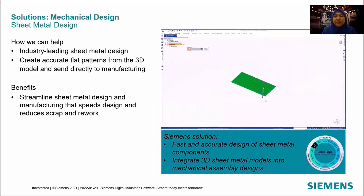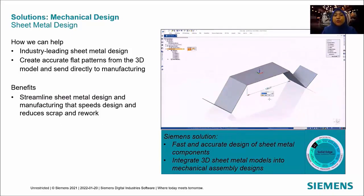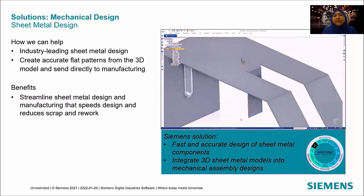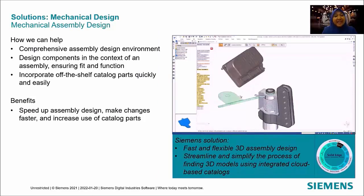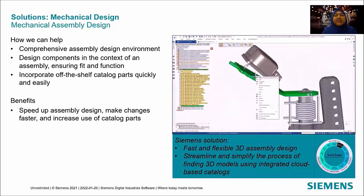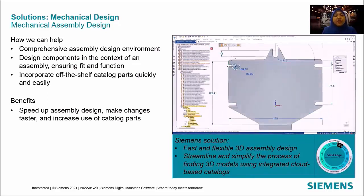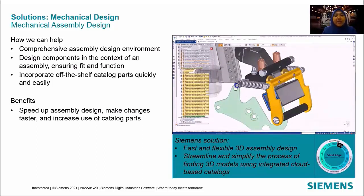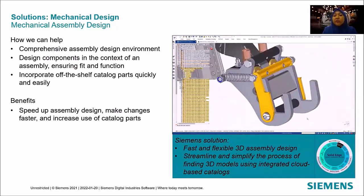Solid Edge is an industry-leading sheet metal design tool that can create accurate flat patterns from 3D models and send them directly to manufacturing, streamlining sheet metal design and manufacturing to reduce scrap and rework. In assembly design, Solid Edge provides a comprehensive assembly design environment where you can design new components in the assembly to ensure fit and function, and incorporate catalog parts quickly and easily.